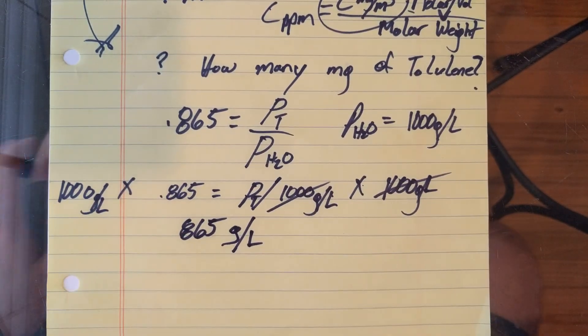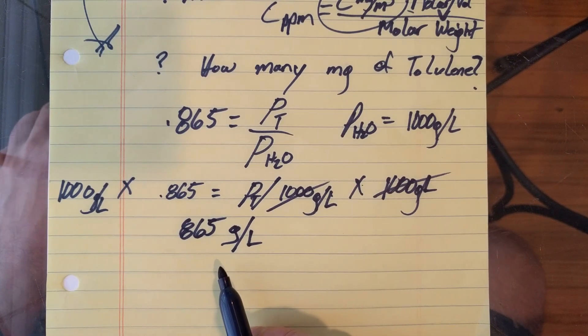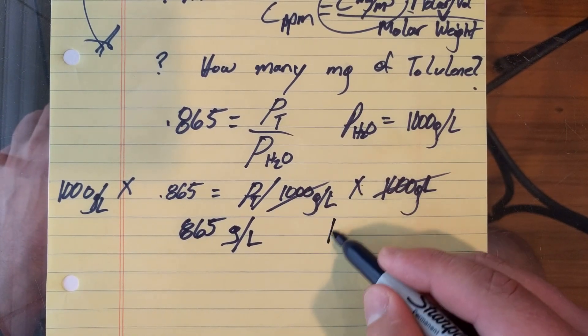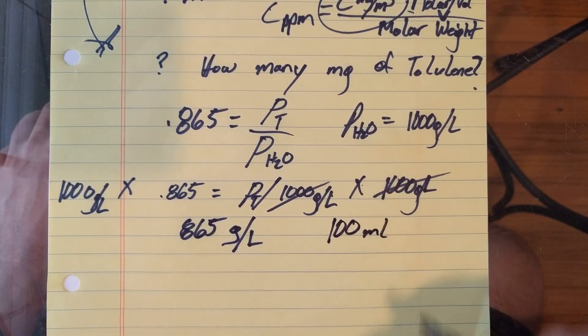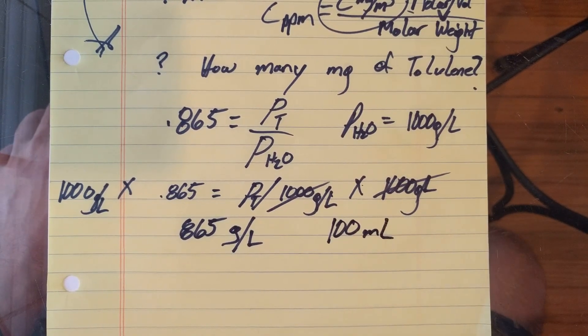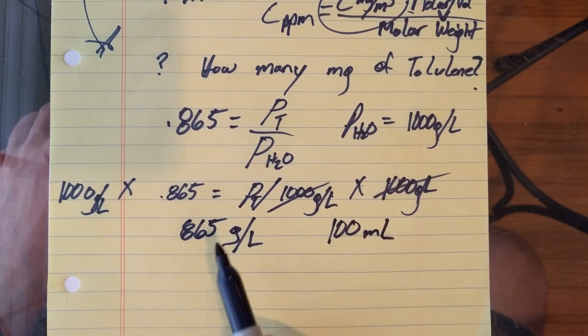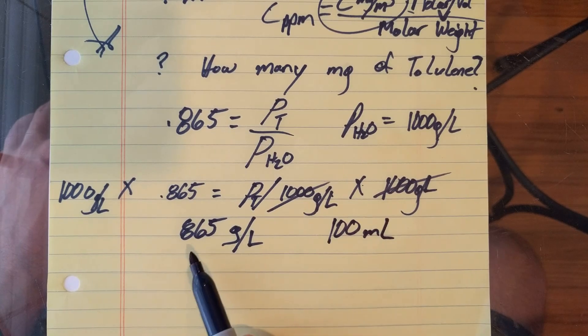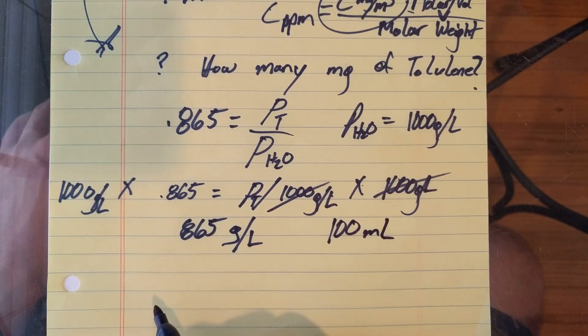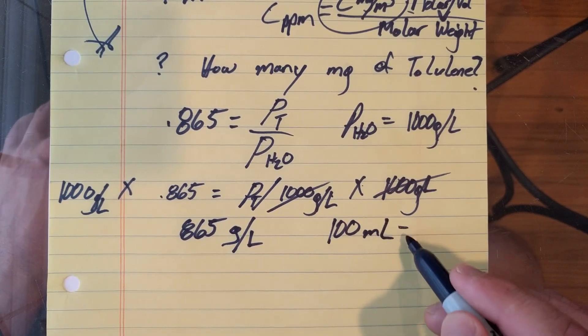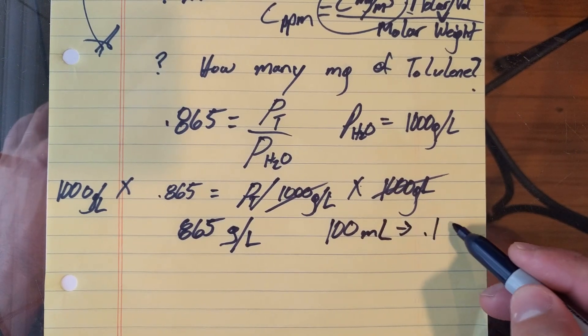That's going to give us, so 1,000 times 0.865 is going to give us 865 grams per liter. Then, with this number right here, and knowing that we have 100 milliliters, we can find how many milligrams of toluene we have, because we can convert this.